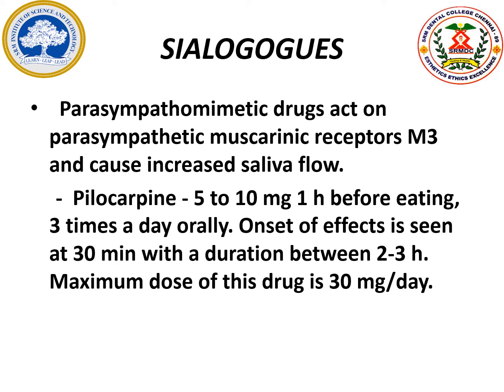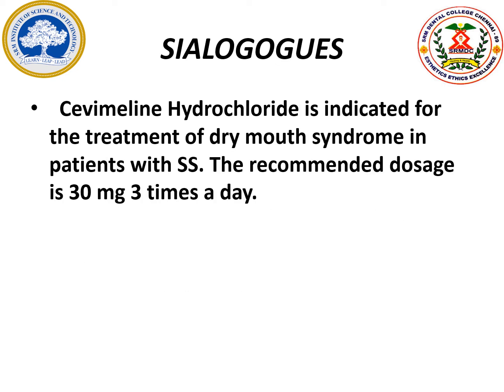How do we administer pilocarpine? As a 5 to 10 mg tablet, it has to be taken 1 hour before food and taken 3 times daily, with a maximum dose of 30 mg per day. The next sialogouge which is most successfully administered is cevimeline. Cevimeline is mainly indicated for the dry mouth syndrome seen in Sjögren's syndrome patients, and the recommended dose is 30 mg, 3 times a day. One advantage of cevimeline is that it acts selectively on salivary glands and does not produce undesirable adverse effects over pilocarpine.